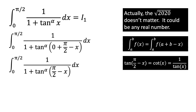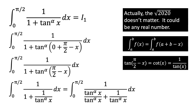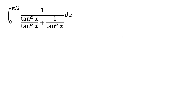At this point, I can apply some trigonometric properties, namely that the tangent of pi over 2 minus x is equal to the cotangent of x, and that the cotangent of x is also equal to 1 over the tangent of x. This gives me the integral from 0 to pi over 2 of 1 over 1 plus 1 over the tangent of x raised to the alpha power, which can easily be simplified to the integral from 0 to pi over 2 of tangent of x to the alpha power over 1 plus tangent of x to the alpha power.